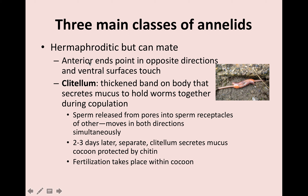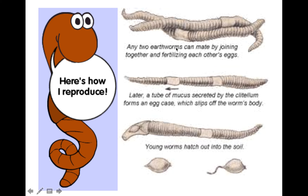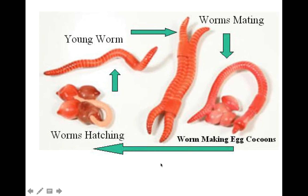Oligochaeta or earthworms are hermaphroditic, but they can mate. The band-like part is called the clitellum, and it secretes mucus to hold the earthworms together during copulation. They exchange sperm, which gets stored in sperm receptacles. A couple days later, the clitellum secretes a mucus cocoon protected by chitin, and fertilization takes place within that cocoon. Here we have two earthworms mating — lined up opposite each other, a tube of mucus secreted from the clitellum is where fertilization takes place, and then the young worms hatch out into the soil.